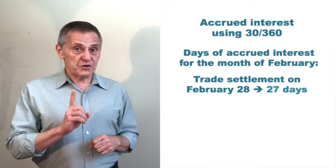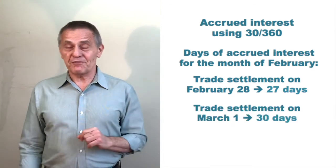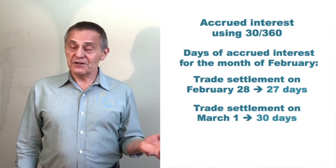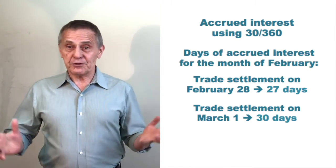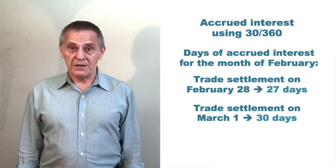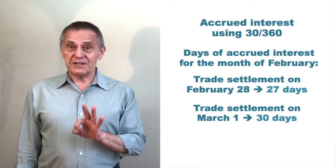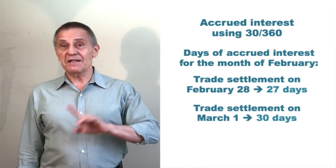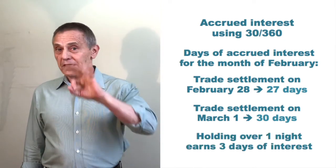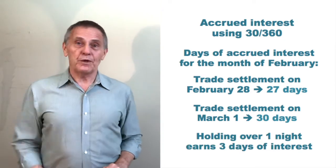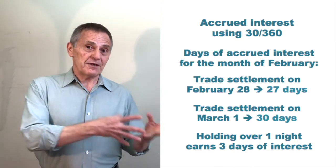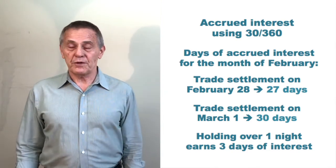What happens if the trade settles one day later on March 1st? Well, of course, if the trade settles on March 1st, the seller gets 30 days of accrued interest for the month of February. In other words, for bonds using the 30/360 day count convention at the end of the month of February, you get three days worth of interest for holding the bond one more day, so the trade settles on March 1st rather than February 28th.